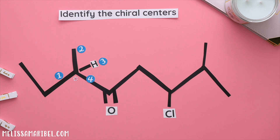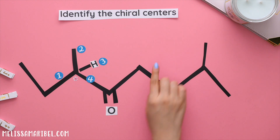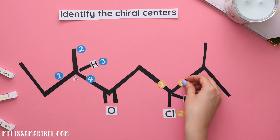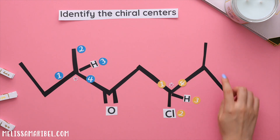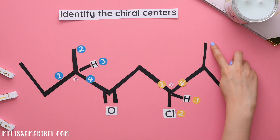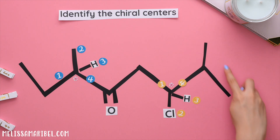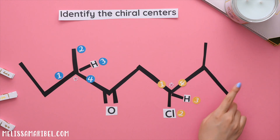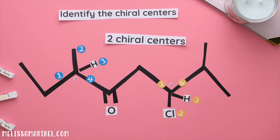Remember, a double or triple bond will never be a chiral center, so this one is not a chiral center. This next carbon doesn't have enough groups. The next carbon has one, two, three, and four different groups — so yes, this is another chiral center. And this nitrogen carbon is a common mistake: it has enough groups, but there are two of the same groups — our methyl groups. We need all four groups to be different, so this is not a chiral center. There are only two chiral centers in this molecule.